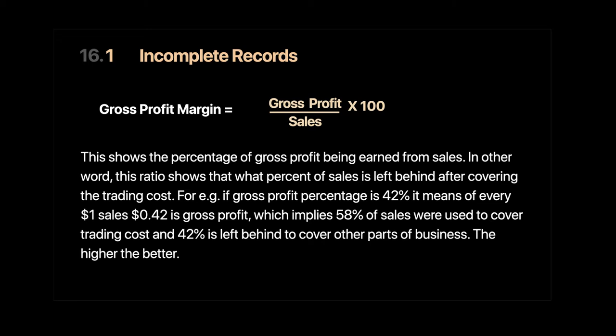What this ratio shows is the percentage of sales being earned as gross profit. For example, if the gross profit margin is 42%, that means for every one dollar of sales, 42 cents is your gross profit and the remaining 58 cents was spent on cost of sales. The higher the margin, the better it is for the firm.